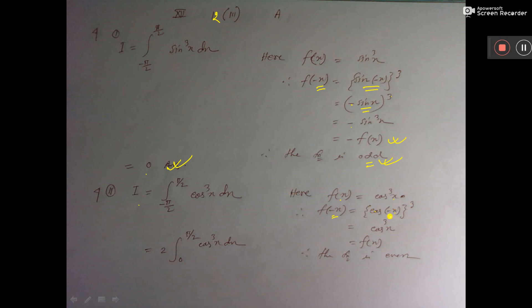Now cos minus theta is equal to cos theta. Minus sin is absorbed. Now this is equal to f(x). f(x) equal to this one we consider. So f(x).